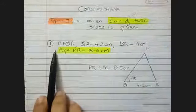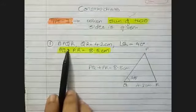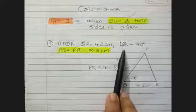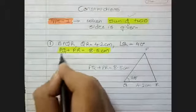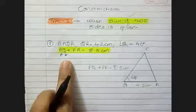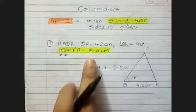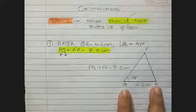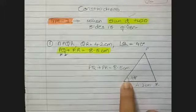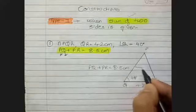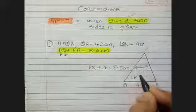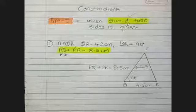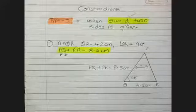In the first example, triangle PQR has the base QR given as 4.2, a base angle of 40 degrees, and the sum of two sides given as 8.5. The rough figure shows the base is 4.2, the base angle is 40 degrees, and the sum of the two sides is 8.5.